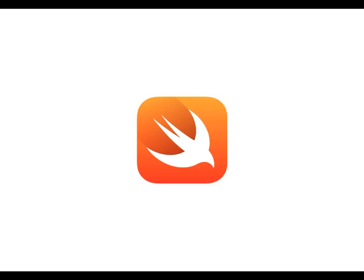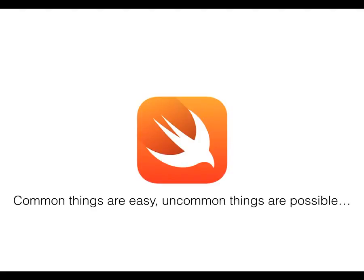Swift follows the complete Apple mantra: common things are easy and uncommon things are possible. Due to the traditions of Objective-C, they decided they got to the extent where they couldn't simplify the language anymore without doing a major restructuring of everything, and if you're going to do that, why inherit all of the traditions? Why not go for something completely new — and that's what they've done.